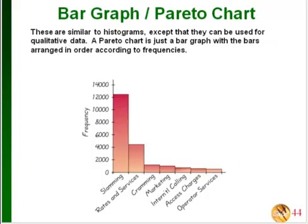This book separates histograms from bar graphs: bar graphs are for qualitative data — categories rather than numbers. In this example, the categories are different reasons people gave for changing their telephone service, and the frequencies are shown as bars. This particular bar graph counts as a Pareto chart, which is a special case of a bar graph where categories are listed with the highest frequency first and going down from there.